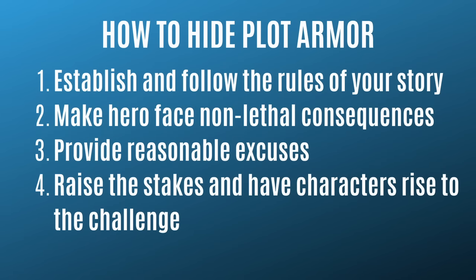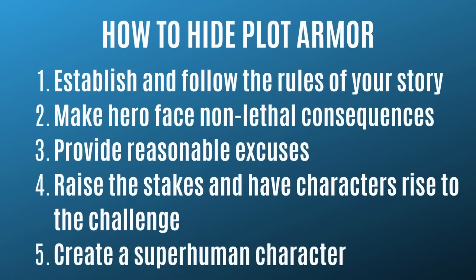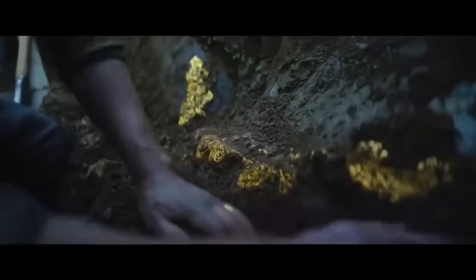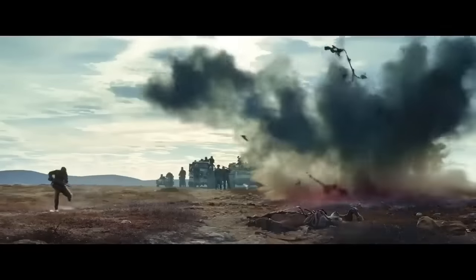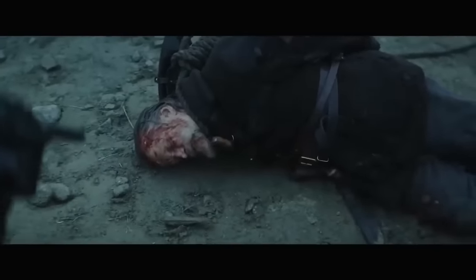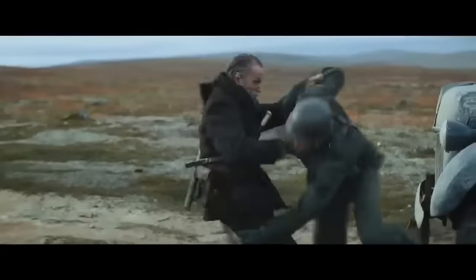Tip number five: some stories can benefit from having a superhuman main character. This doesn't necessarily mean making your main character a literal superhero like Superman, Wolverine, or Spider-Man. But in some stories, you can build a sense of mystery around a character and their ability to survive things that would kill anyone else. An example comes from the 2023 movie Sisu, set during World War II — a man from Finland discovers gold and gets chased across the wilderness by Nazi soldiers. He survives a series of increasingly unbelievable encounters, and we learn he's a legendary commando with a dark, tortured history nicknamed the Immortal. The movie embraces this idea to create exciting action sequences built around this superhuman character.